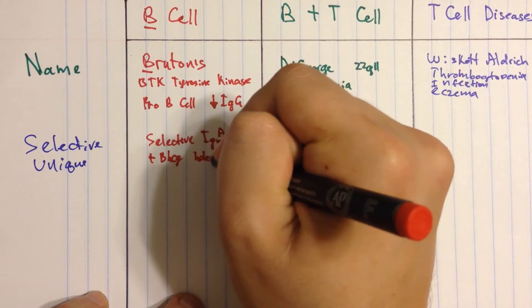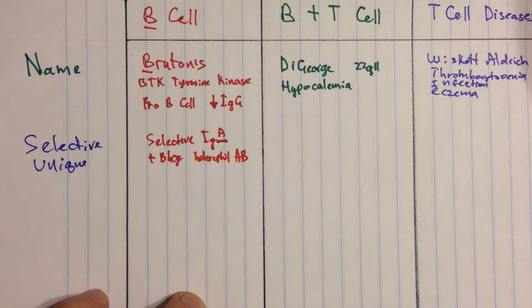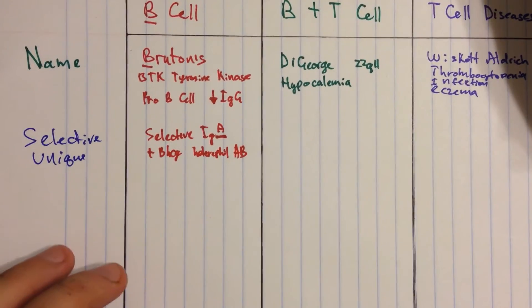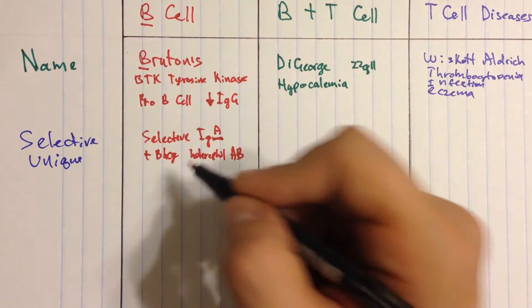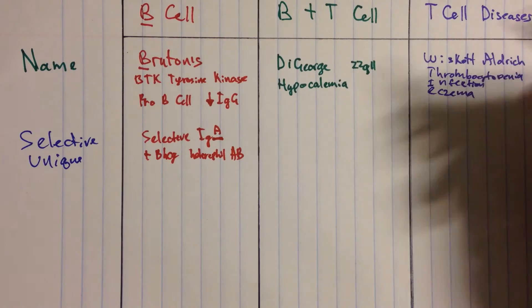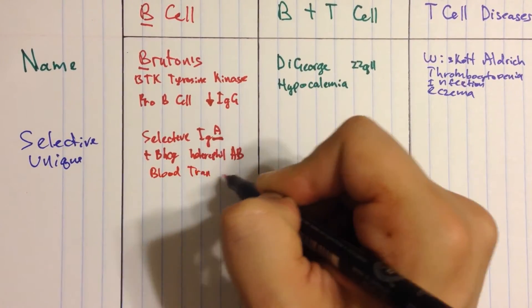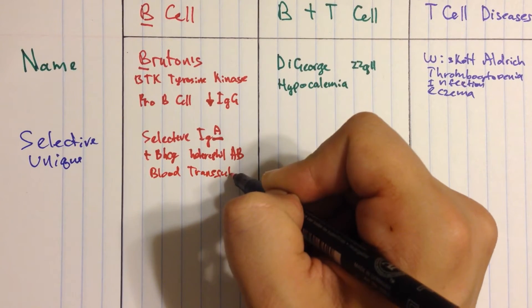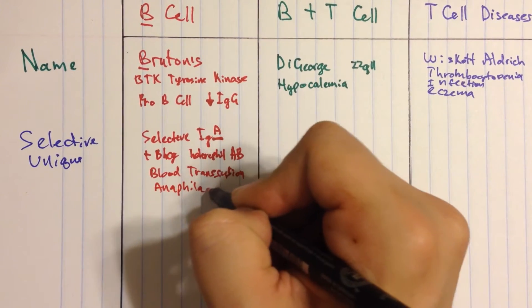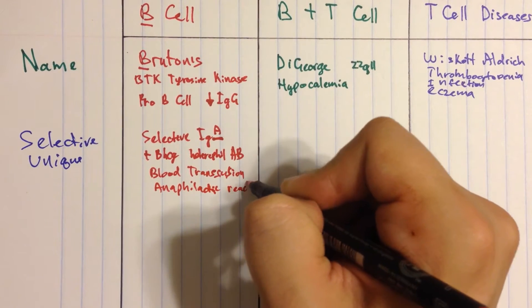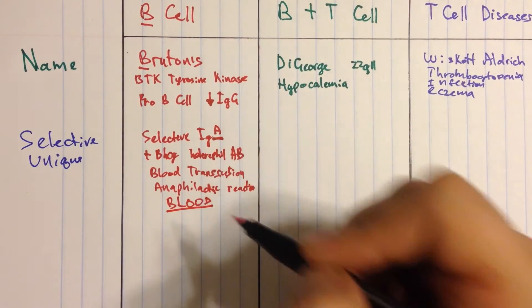And what you're really looking for is a person maybe who came in hospital and got a blood transfusion which had IgA in it. And as a result, because this person is IgA deficient, their body thinks that IgA is a foreign antigen and attacks it. So think of a blood transfusion and maybe anaphylactic reaction. I'm going to put blood here because it's in red.